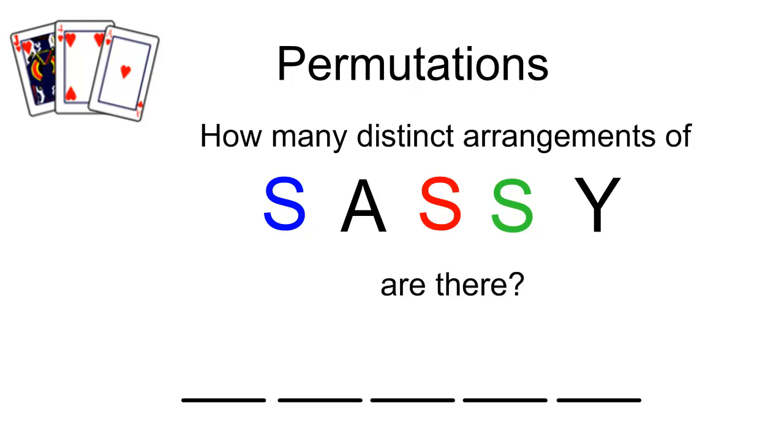So we've been looking at permutations, and we've been looking at permutations of unique elements. So here's a new kind of question: How many distinct arrangements of SASSY are there?